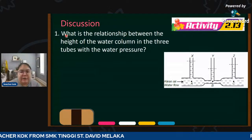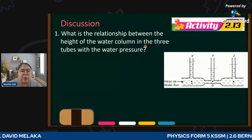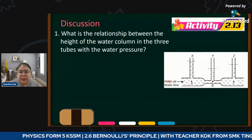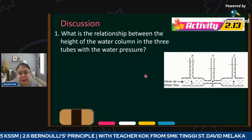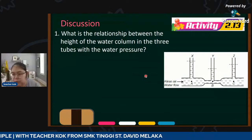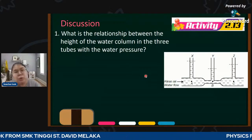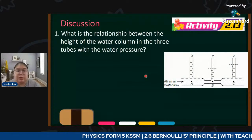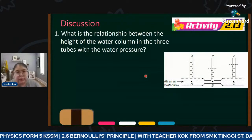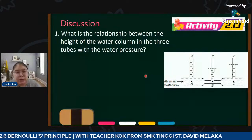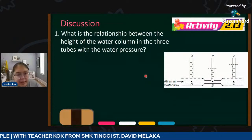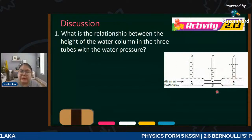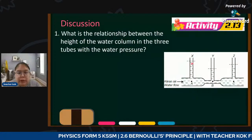The question asks: what is the relationship between the height of the water column in the three tubes and the water pressure? When water starts to flow, it flows from high pressure to low pressure. The starting part of the tube has high pressure; toward the end it should be lower pressure. Because of the different cross sections, A should have high pressure, B is second, C is the last.